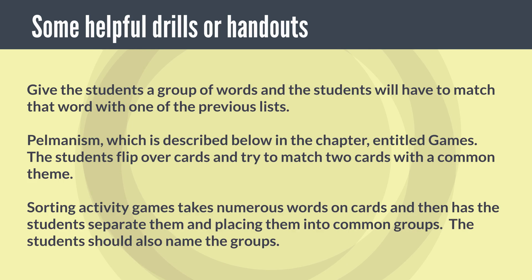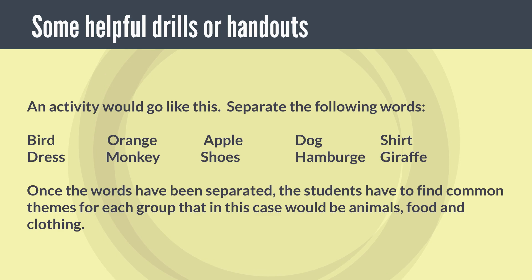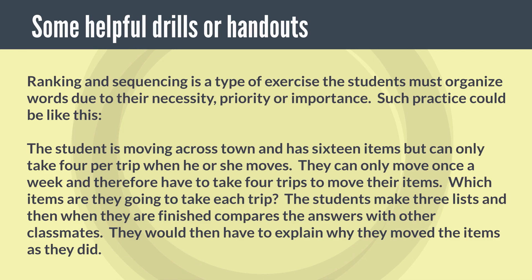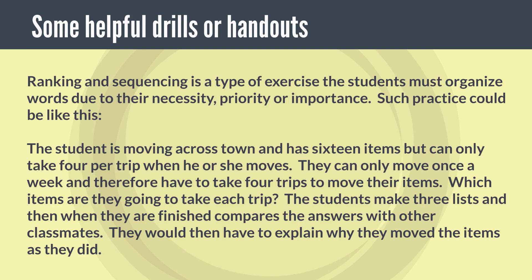An example sorting activity: separate the following words — bird, orange, apple, dog, shirt, dress, monkey, shoes, hamburger, giraffe — into common themes: animals, food, and clothing. Ranking and sequencing is an exercise where students organize words by necessity, priority, or importance. For example, a student is moving across town with 16 items but can only take four per trip, moving once a week over four trips. Which items do they take each trip? Students make their lists and compare answers with classmates, explaining their choices. Items might include refrigerator, television, dresser, bed, stove, pots and pans, clothes, and ironing board.